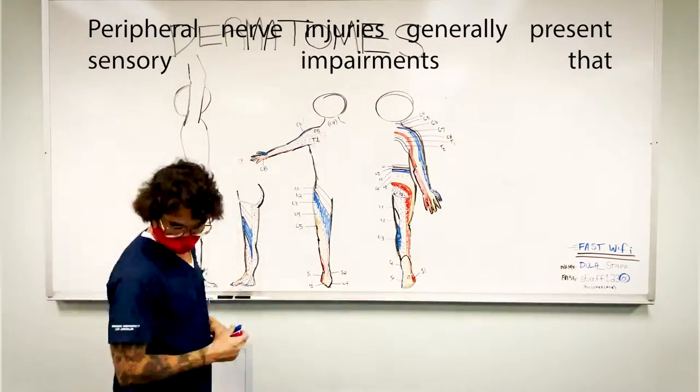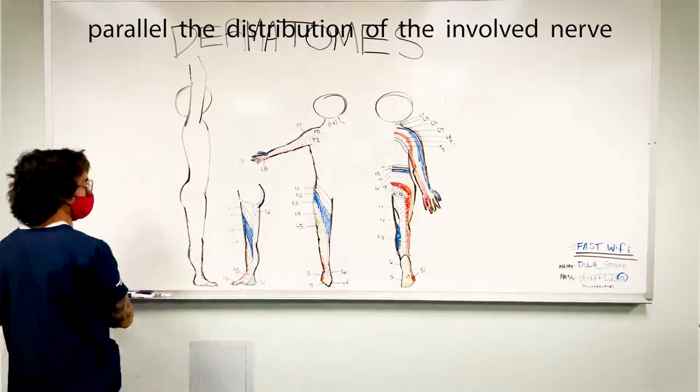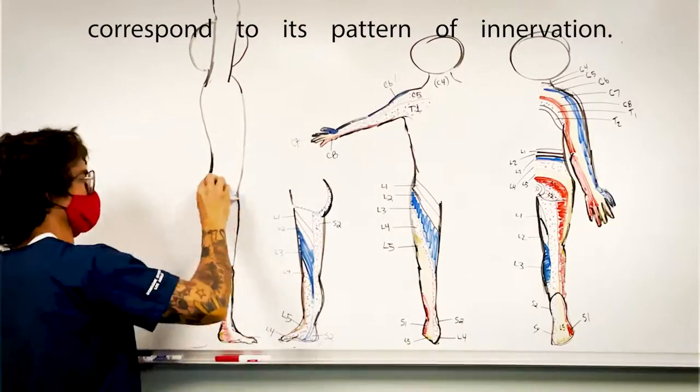Peripheral nerve injuries generally present sensory impairments that parallel the distribution of the involved nerve and correspond to its pattern of innervation.